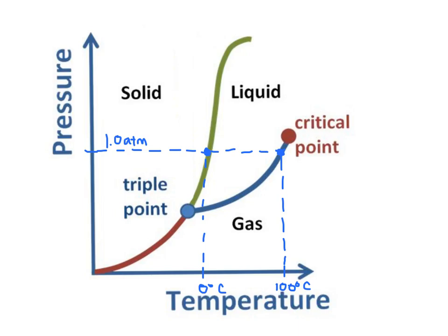Now there's some other interesting things here. So we have these boundaries where we can have solid turning to liquid, liquid turning to gas. We can even have solid going straight to gas. We call that sublimation. We also have a point right here where all the different lines converge, and we call that the triple point.